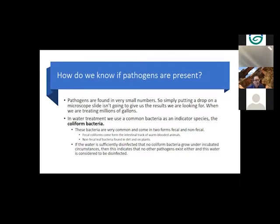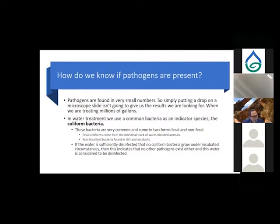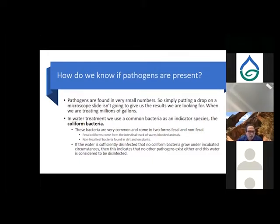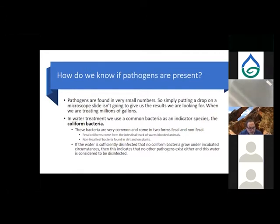Coliform bacteria come in two forms: fecal and non-fecal. Fecal coliforms come from the intestinal tract of warm-blooded animals — that's where you get E. coli. Non-fecal coliforms are leaf or dirt bacteria found on plants and don't necessarily have a fecal component. If the water supply is sufficiently disinfected, no coliform bacteria will grow under incubated circumstances.